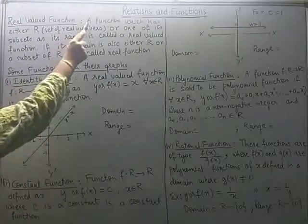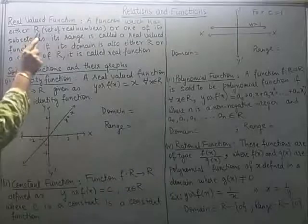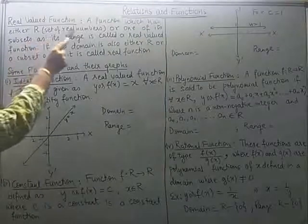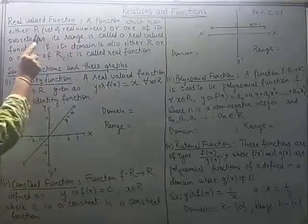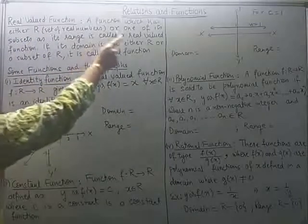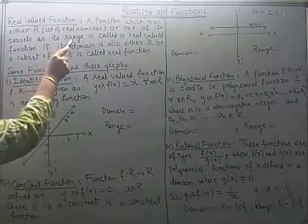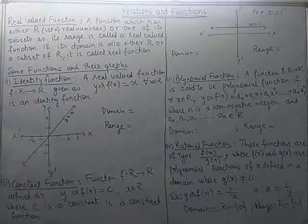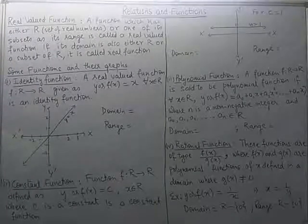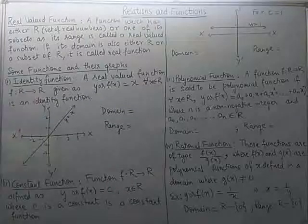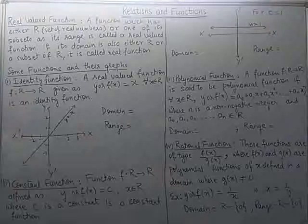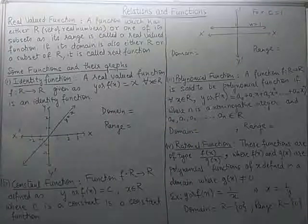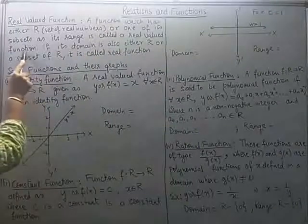As per the definition, a function which has either R — this notation R is for set of real numbers, not for relation — or one of its subsets as its range. So the range of the function has to be a real number or it should be a subset of the real numbers. Subsets of real numbers are written in the form of intervals. If the function has the entire set of real numbers or its subsets as its range, then it is called a real valued function.